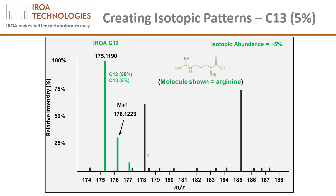There are three significant consequences of this. One: the height of the M plus 1 is a step function, in that a seven carbon molecule will be 36%, an eight carbon 41%, a nine carbon 46%, etc. There are no half carbons. Thus, the relative height of the M and the M plus 1 is a step function that yields the number of carbons in the molecule underlying the peak.